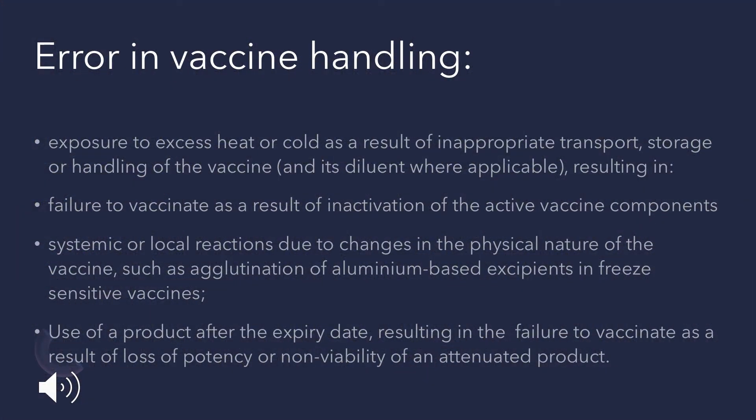Error in vaccine handling: during storage and transportation, if the vaccine is exposed to excess cold or heat, it may be inactivated or damaged. If the vaccine is not diluted properly or inactivation is not up to the mark, it may remain active and cause adverse events. Sometimes agglutination may develop in some vaccines, causing systemic or local reactions. Always check the vaccine for its expiry date — using an expired vaccine decreases potency and does not produce adequate results.